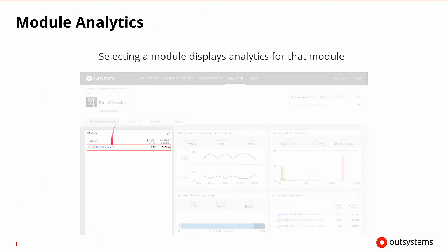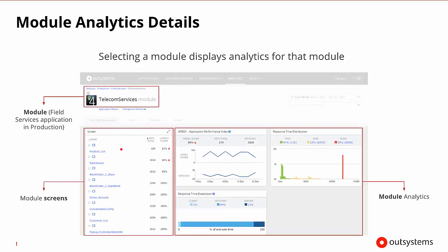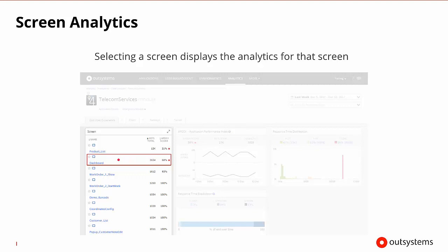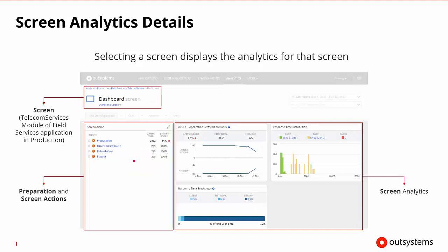Drilling down inside Field Services, we can click on a module to get all detailed information about it. Here we see the Telecom Services module with multiple screens inside it. We still get the Appdex score, response time, and overall breakdown at the module level. We can then select a particular screen — the product list and dashboard are both performing poorly, so we can drill down into those. Selecting the dashboard screen shows all the screen actions available, and the preparation action appears to be causing the performance problem.